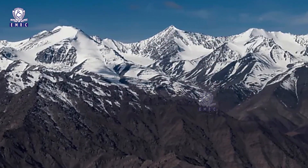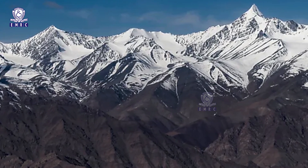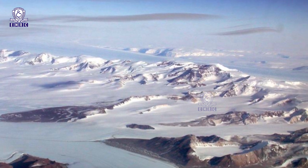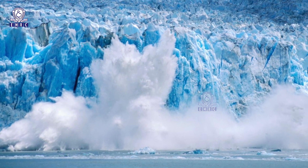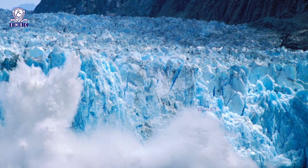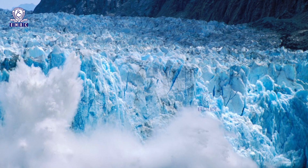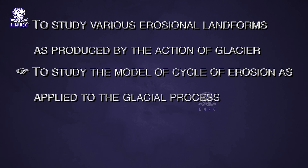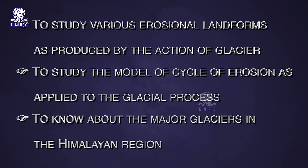The erosional activity, specially undertaken by valley glaciers, produces a fantastic and picturesque landscape in snow-covered mountains. The erosional work of the glacier is mostly confined above the snow line and also during glacial movement when it leaves the snow field. The main objectives of this lesson are: to study various erosional landforms produced by the action of glaciers, to study the model of cycle of erosion as applied to glacial processes, and to know about the major glaciers in the Himalayan region.